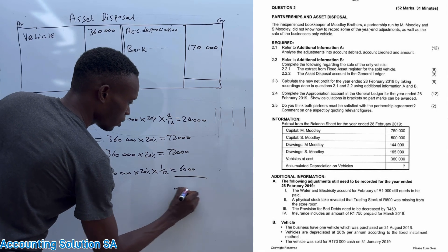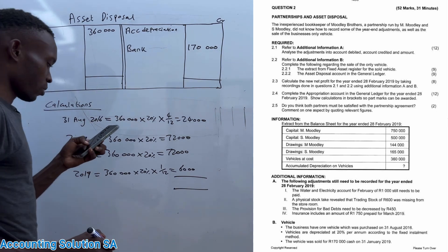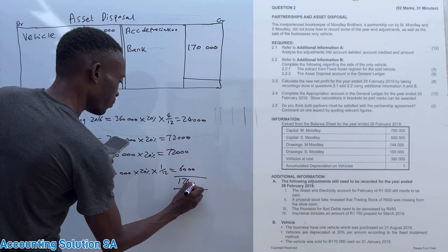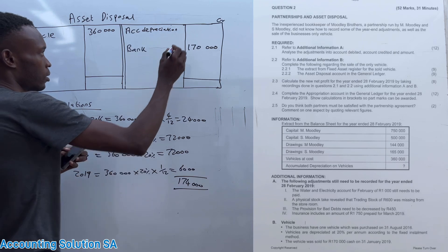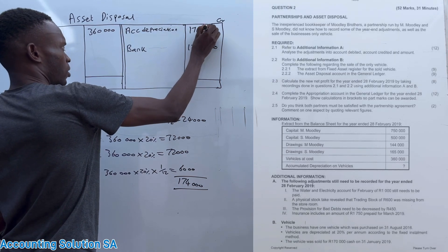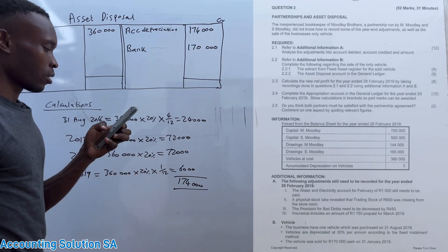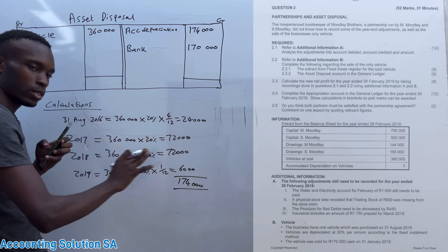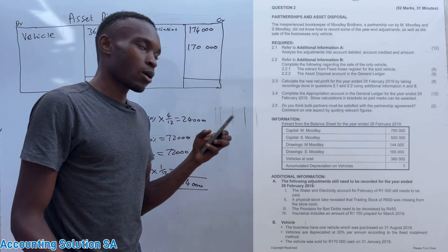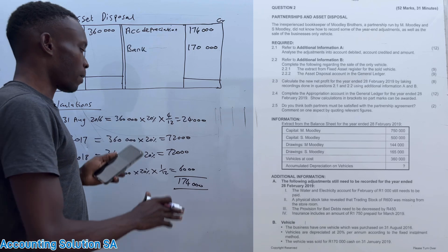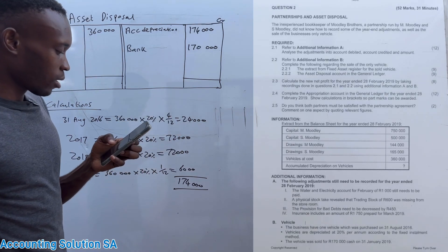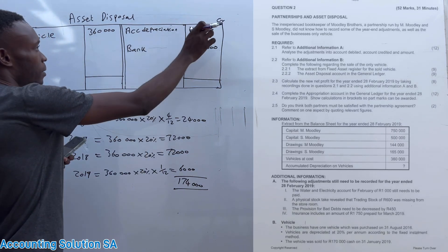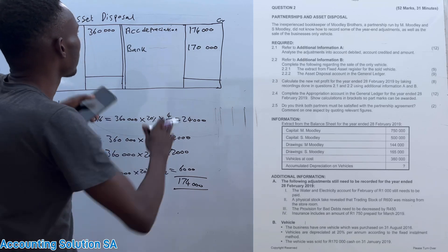If you add all of those amounts together — 24,000 + 72,000 + 72,000 + 6,000 — it gives you a total accumulated depreciation of 174,000. There are a lot of marks in this calculation. Now that we have this figure, we can check which side of the disposal account is higher.